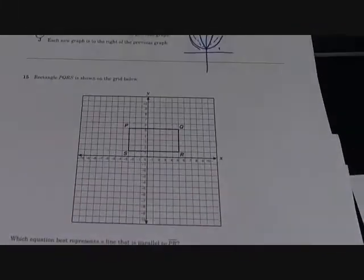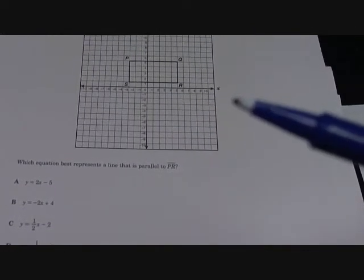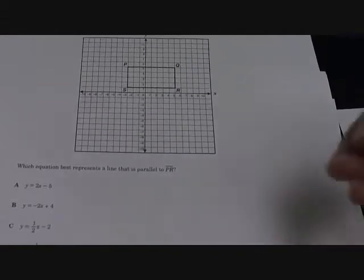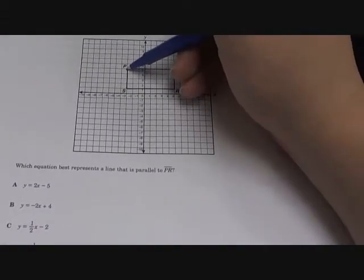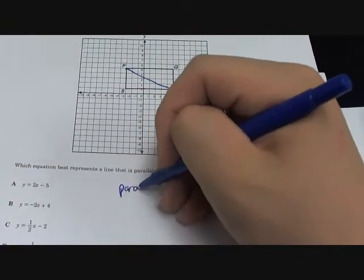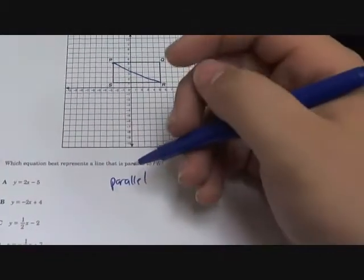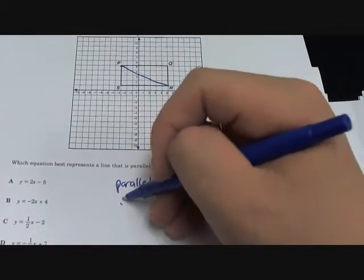Rectangle PQRS is shown on the grid below. Which equation best represents a line that is parallel to PR? So this is PR. Remember what parallel means - parallel lines have to have the same slope.